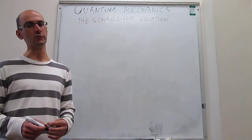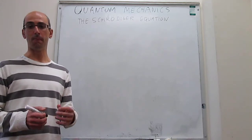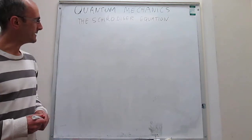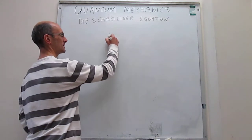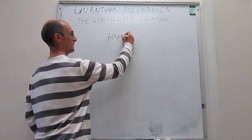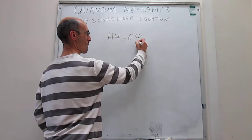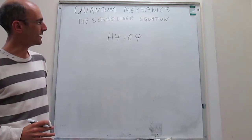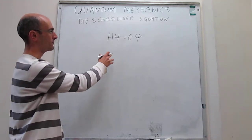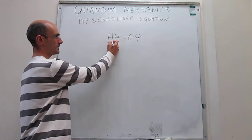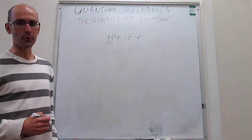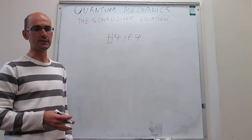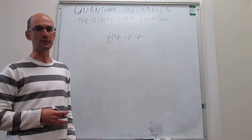The equation we're going to use to study particles that have wave properties is the Schrödinger equation, which has this form. Let's explain what each of the terms in this wave equation mean. This is something that we call the Hamiltonian operator, and it's simply a bunch of mathematical operations that we're going to describe in just a little bit.